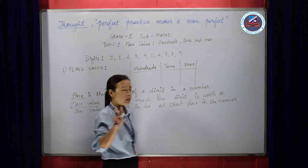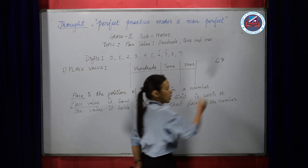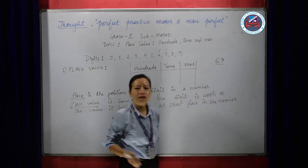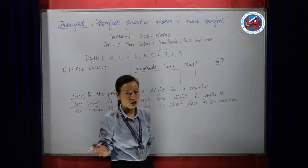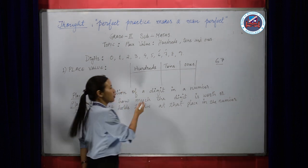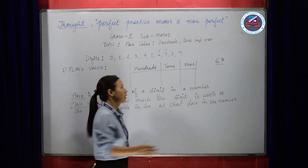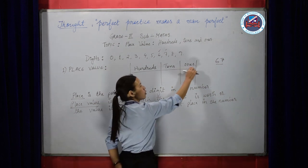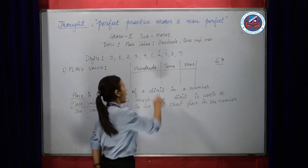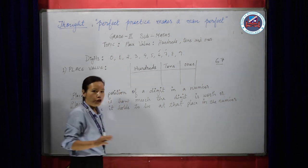Suppose let's take a two-digit number. I'll take here 6 and 7, so 6 and 7. Together these two digits make 67. So that's how we use digits to form a number. Here we are going to learn about three-digit numbers, that is we have three places: the first place we call the 1s, the second place we call the 10s, and the third place we call the 100s.